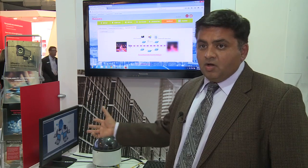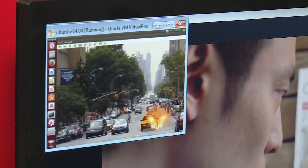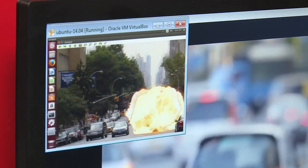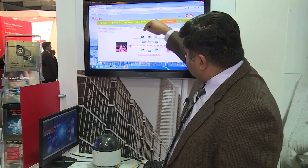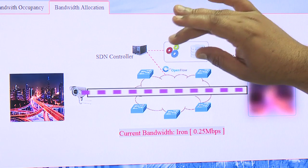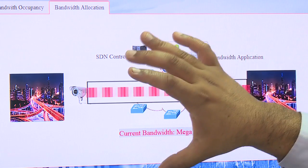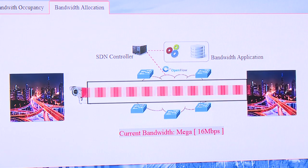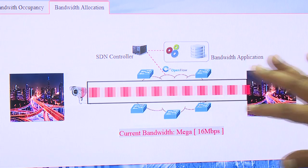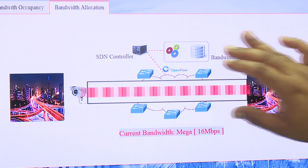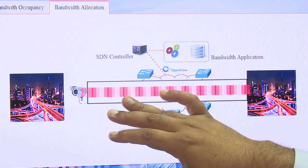It's a smart city on SDN. As soon as we create — you see a blast happening — the camera here detects it, the application goes and talks to the controller, the application asks the controller to allocate a fat pipe, and you can see the network has been reconfigured and a high-speed, high-bandwidth pipe has been allocated to this camera.